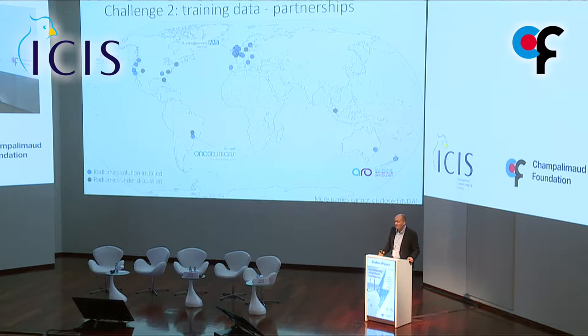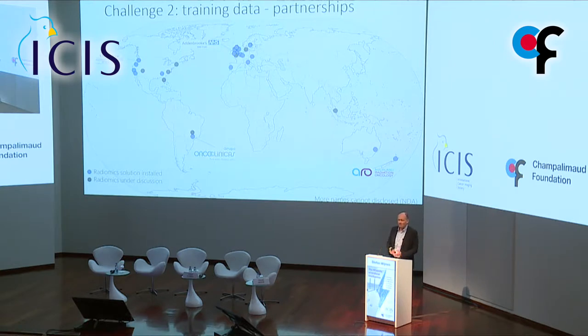Diverse partnerships are important. For example, at the University of Washington in Seattle, prostate cases use fiducial gold seeds, which caused very bright artifacts our initial machine learning couldn't cope with. But now that we have created one model based on images from different centers, different scanners, and different artifacts, we see the machine learning model becoming better and better. Diversity is important to create a really robust model.